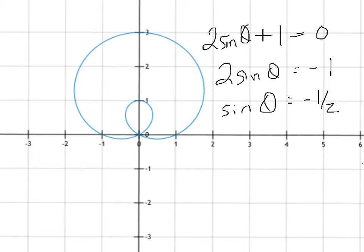but this is negative one-half. So we're talking about 7 pi over 6 and 11 pi over 6. That would be the bound for your integral.